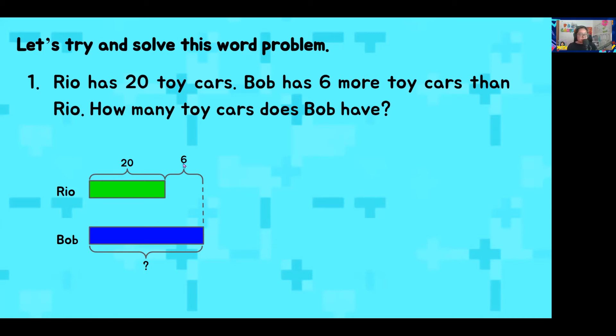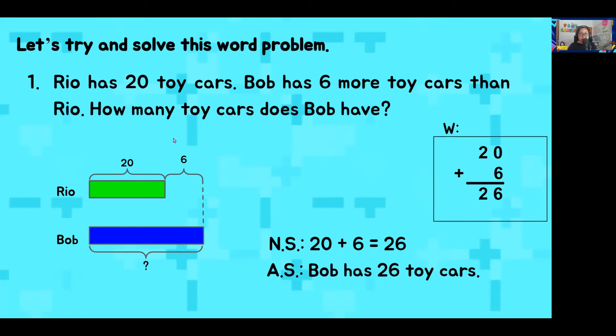We need to add 20 and 6 to be able to get the correct answer of 26. So, that is our working. Remember to also make the number sentence. From left to right, 20 plus 6 equals 26. And the answer statement answering our question, how many toy cars does Bob have? Bob has 26 toy cars. Very good. Easy, right?